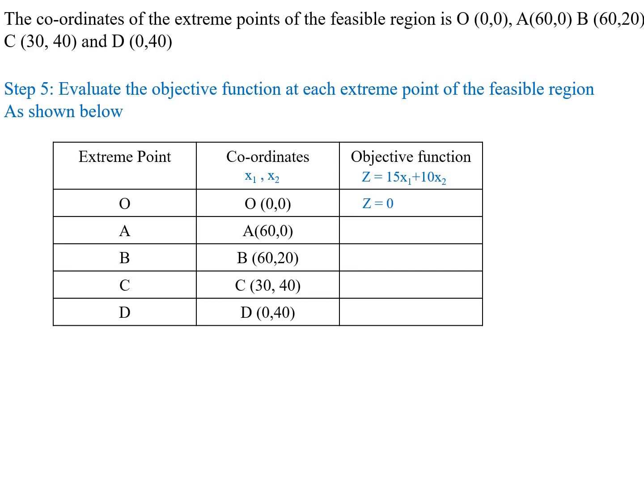For point A with x1 = 60, x2 = 0: Z equal to 900. For point B with x1 = 60, x2 = 20: Z equal to 1100. For point C with x1 = 30, x2 = 40: Z equal to 850. For point D with x1 = 0, x2 = 40: Z equal to 400.